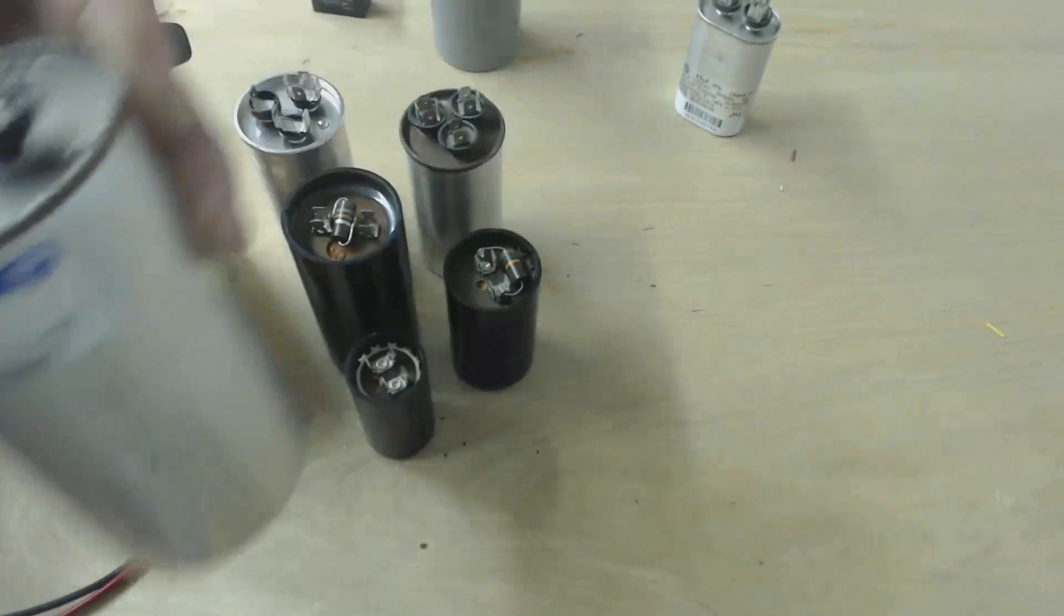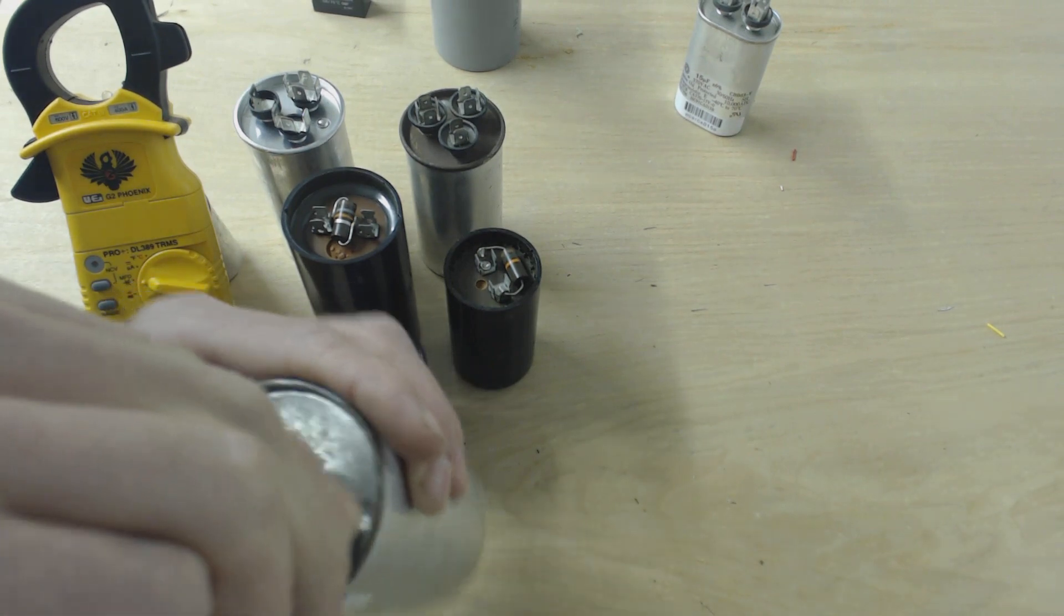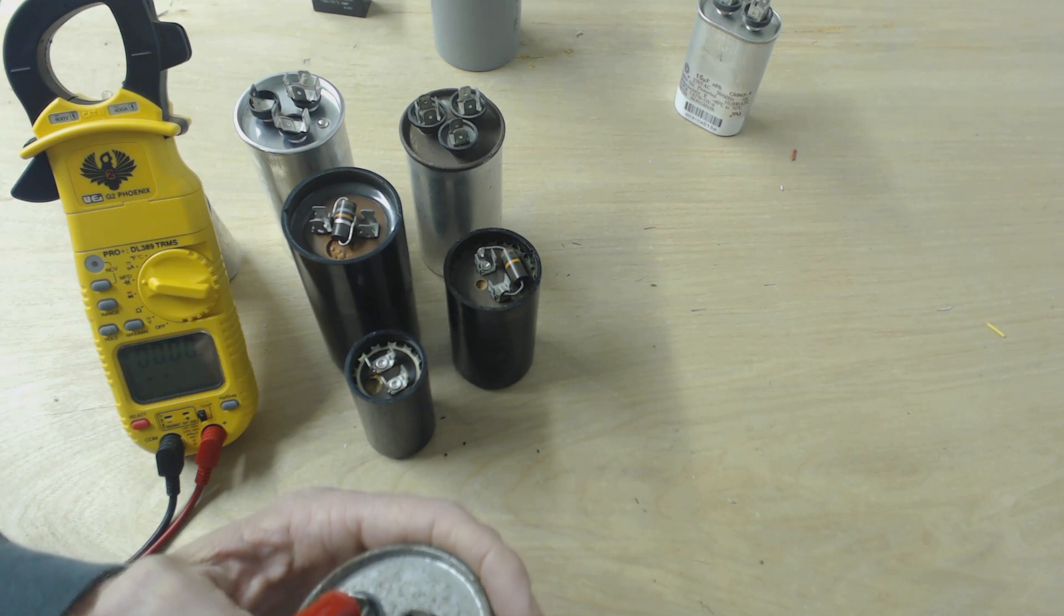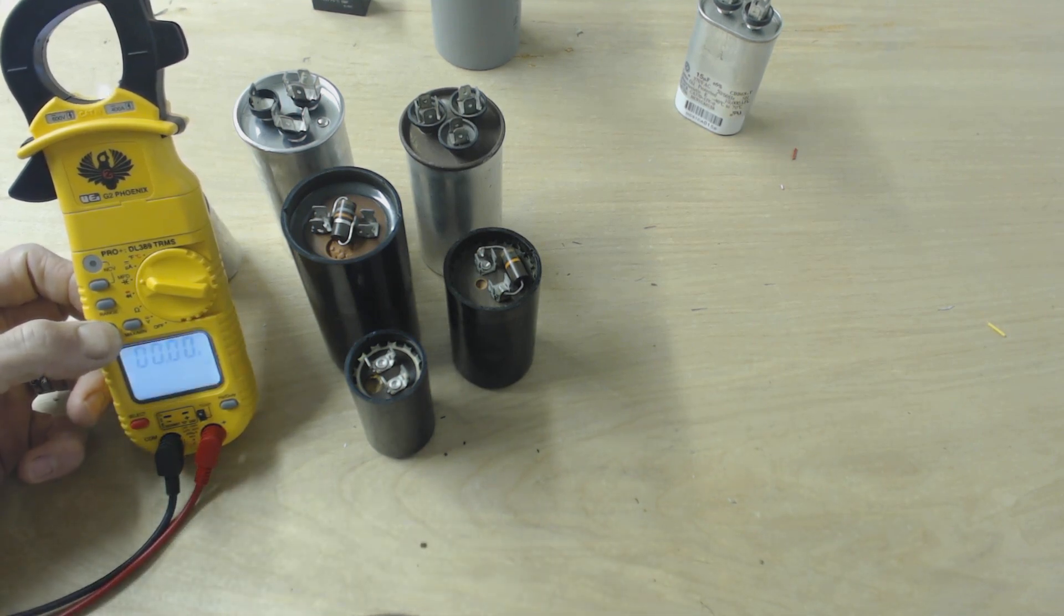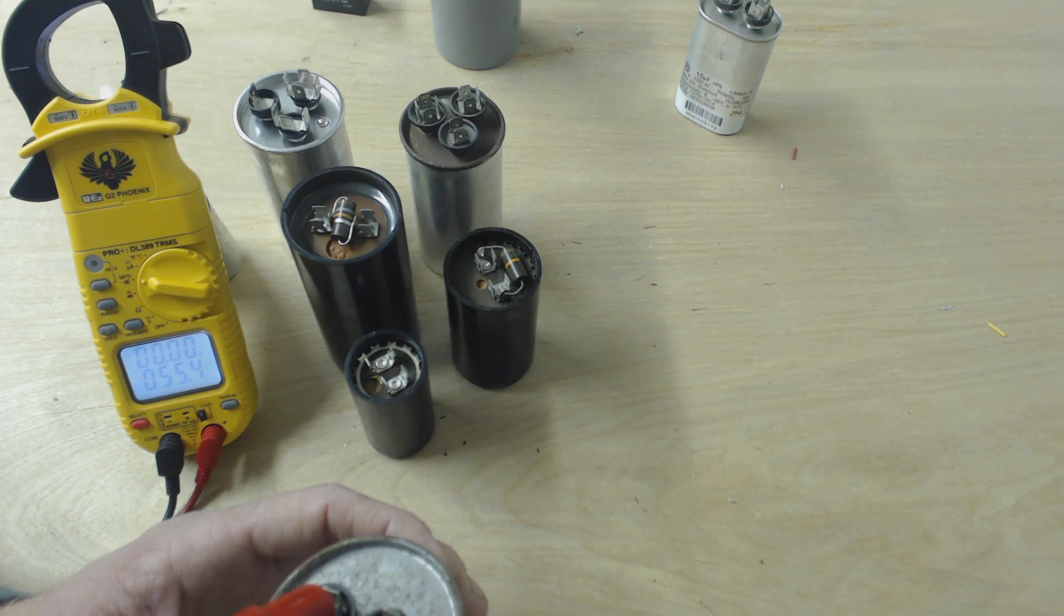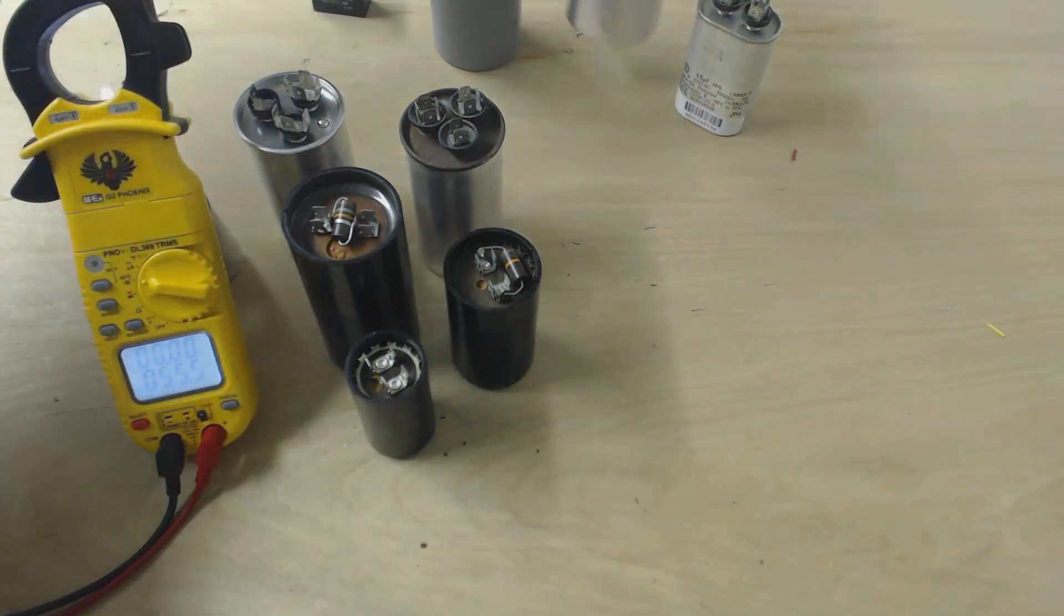So that is 55 UF. We'll go ahead and test that one out. You can see this one's taking a little longer than the other ones. The other thing is you want to have good contact, so I might go ahead and take these alligator clips off. This one is reading 55.4 UF, so that one's good.